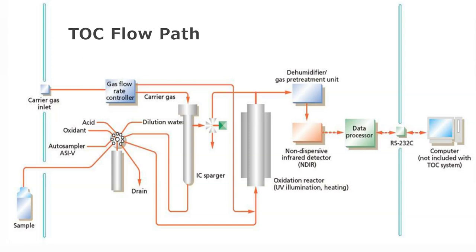Once our sample gets taken into this port, it's either sent to an IC sparger for measurement of inorganic carbon or our oxidation reactor for combustion. It's then dehumidified and scrubbed for halogens, and then sent to a non-dispersive infrared detector for detection. The software provided with the TOC can then process the data and it can be collected. We're going to briefly discuss each one of these components to help you understand what they do.